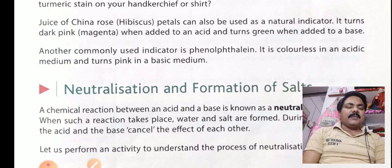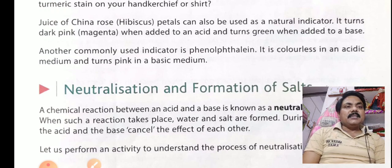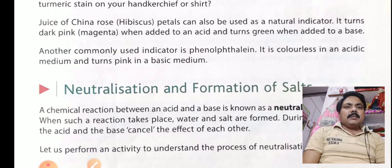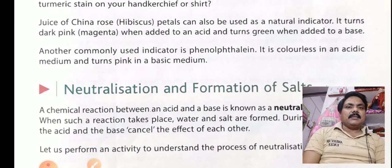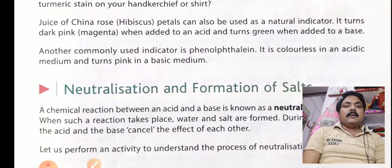Another commonly used indicator is phenolphthalein. This is a chemical indicator. Phenolphthalein is colorless in its normal state and also colorless in acidic medium, but it turns pink in a basic medium. You should remember: phenolphthalein is colorless with acid and turns pink with base. Make sure you know all the indicators and how they change color.